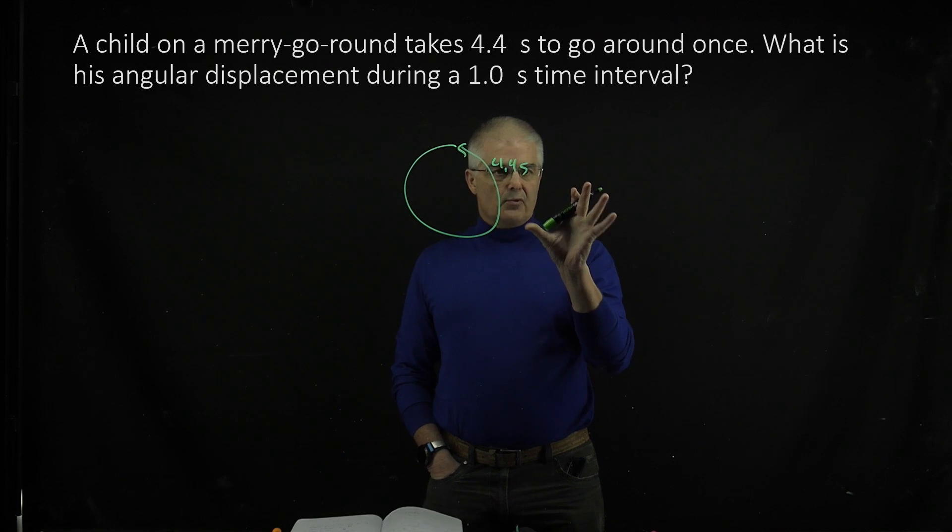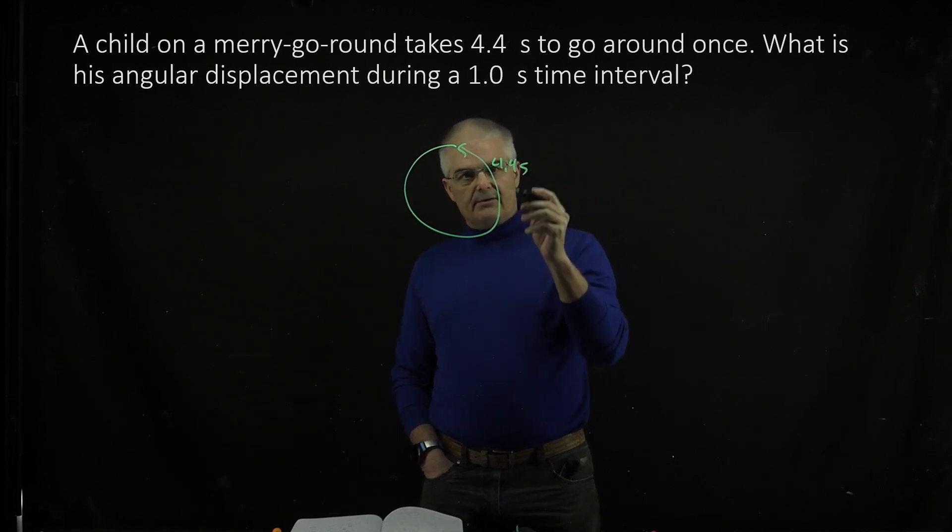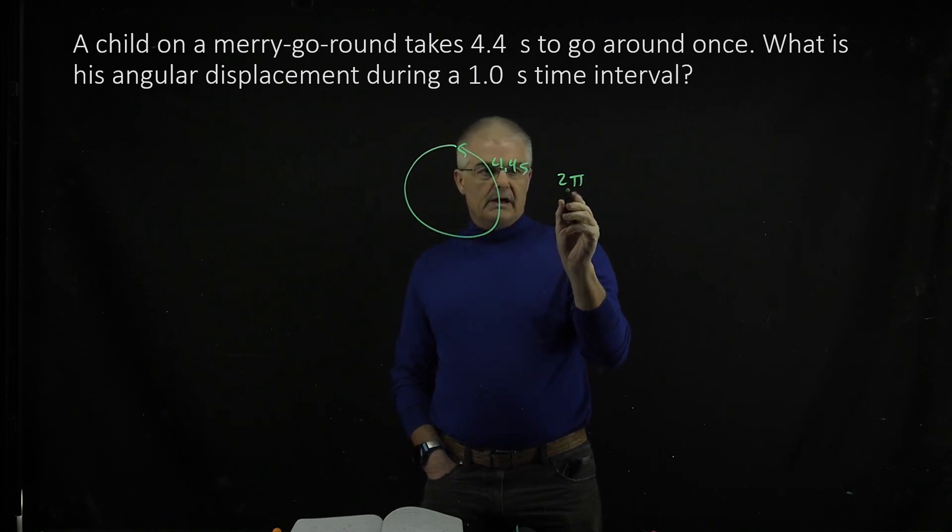Now remember, we need to be working in radians. So he's traveled 2π radians - one complete circle is 2π - in 4.4 seconds.